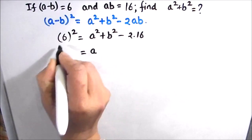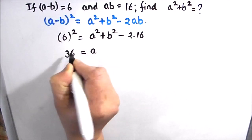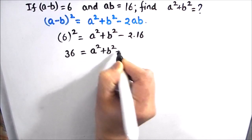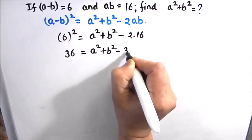That comes out to be 6² is 36 is equal to A² + B² minus 2 times 16 is 32.